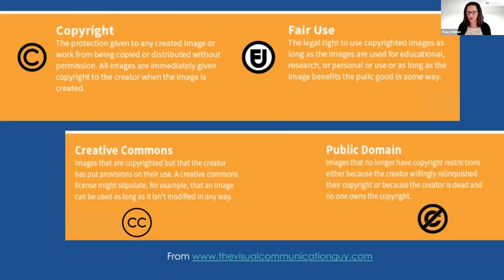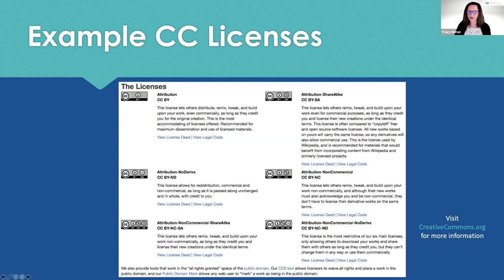When looking for photos, watch for the copyright symbol (©) — you can't use that without permission. There's the fair use symbol, which means you can use it for certain purposes. Creative Commons means the creator has given certain licenses allowing you to use it in specific ways. And then public domain means any copyright has passed and you are allowed to use it. There are different Creative Commons licenses — some require attribution, some restrict commercial use, some prevent modification.